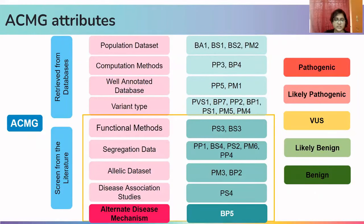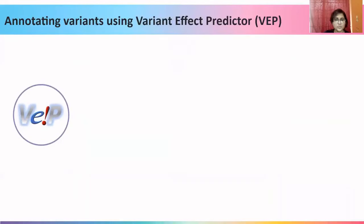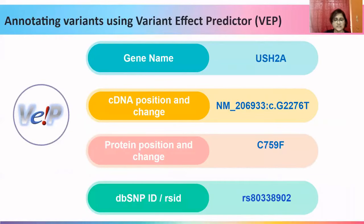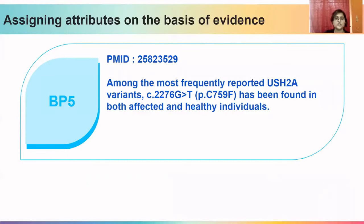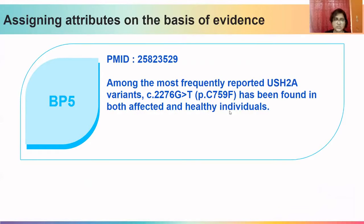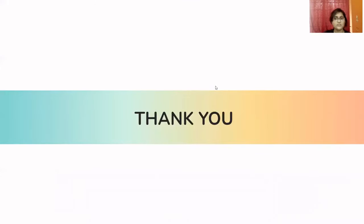The last attribute is BP5. For a variant in the USH2A gene, literature showed that this variant was found in both affected and healthy individuals in large numbers, so BP5 was assigned. I hope this lecture clarifies the steps to follow to mine literature, retrieve relevant articles, and assign ACMG attributes — enabling you to understand the clinical significance of variants. Thank you for your attention.